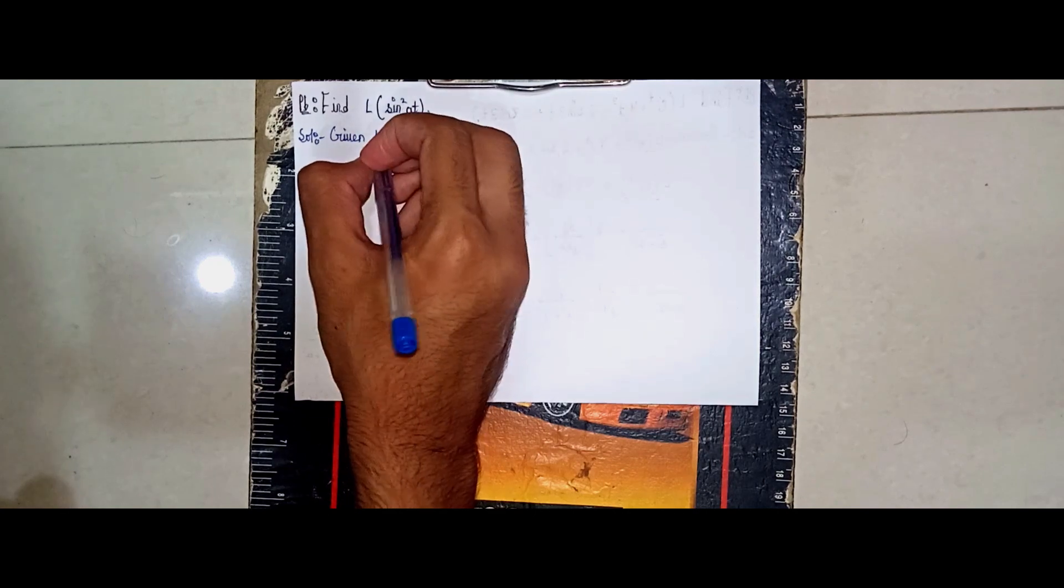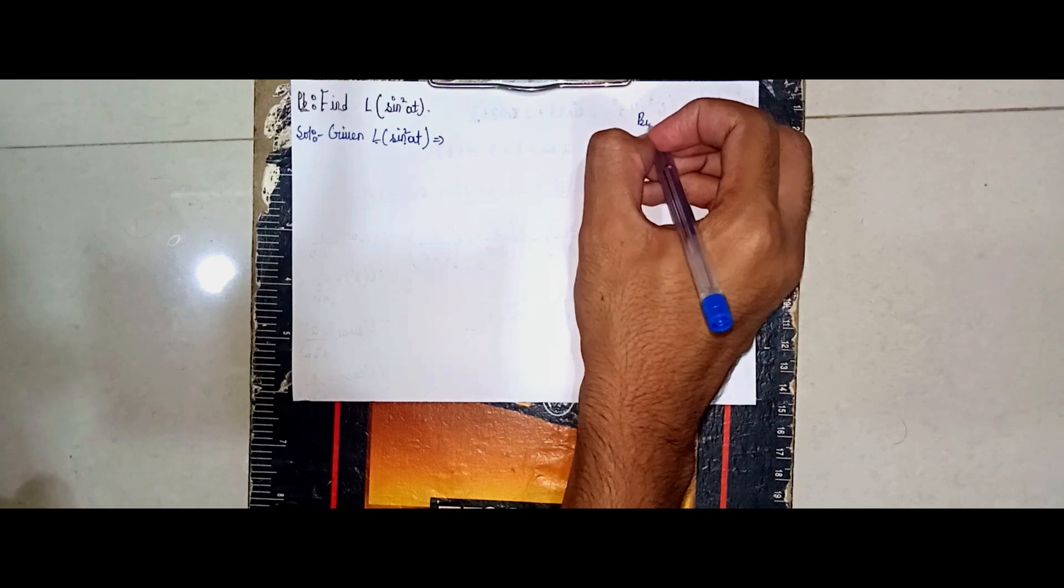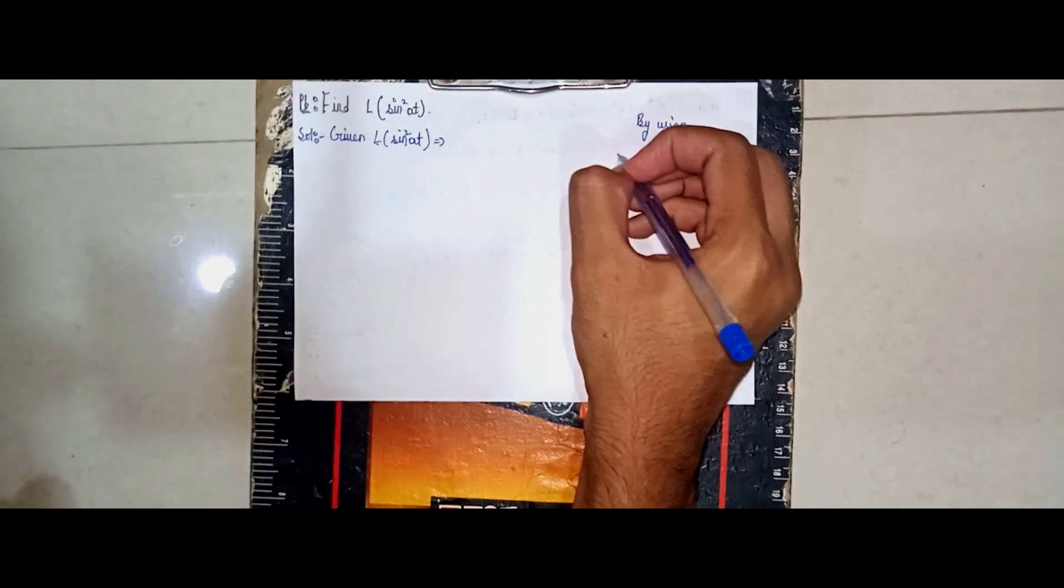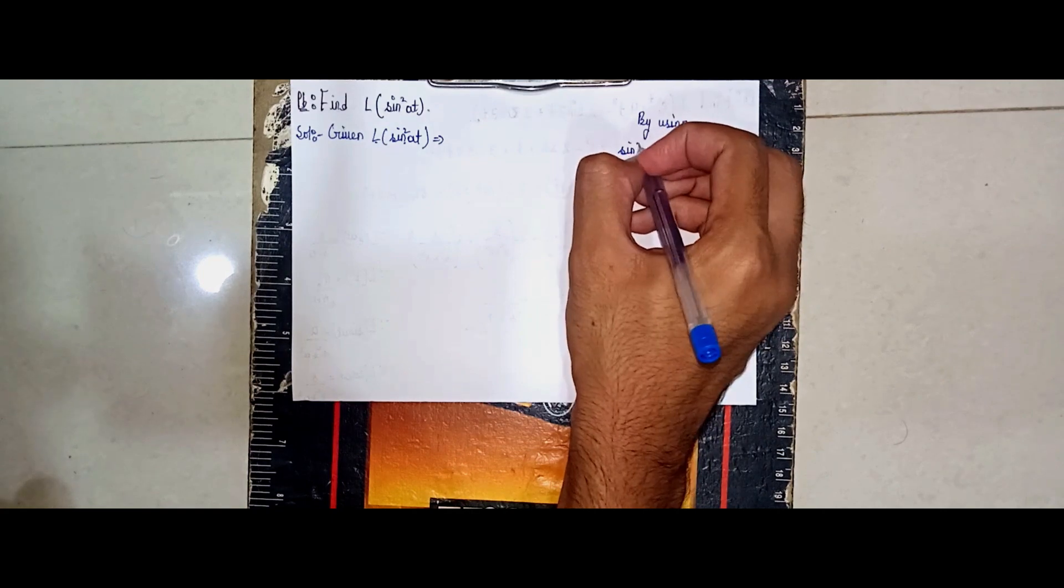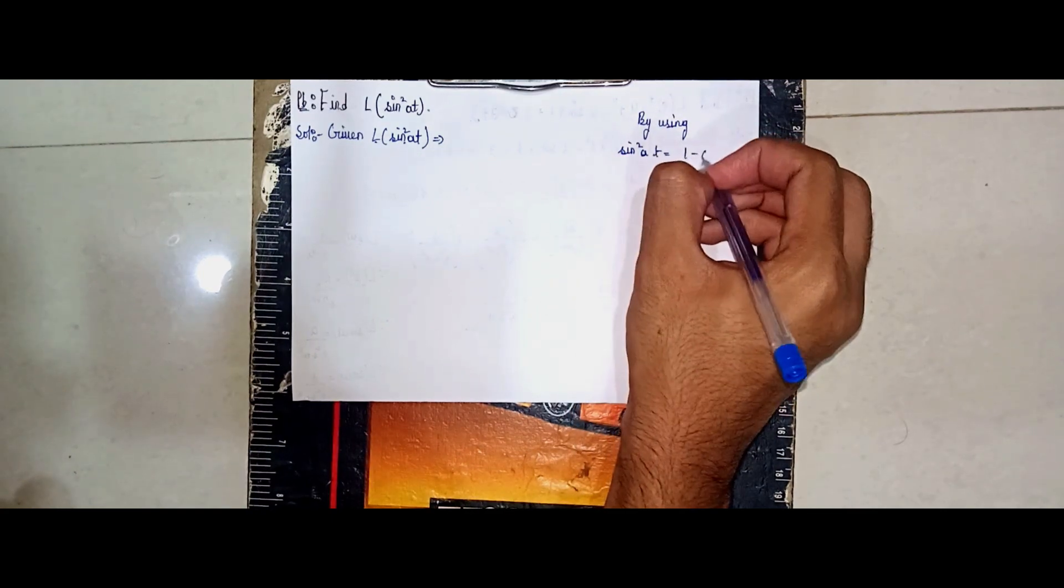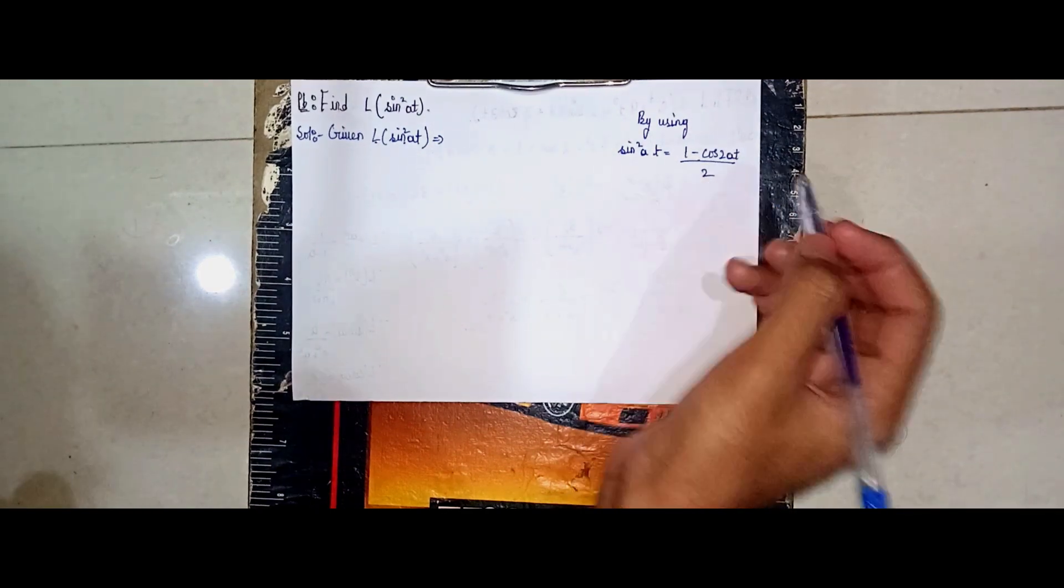We don't have a direct formula for this, so you have to convert it. By using the identity: sin squared 8t equals (1 minus cos 2·8t) divided by 2. This is the formula.